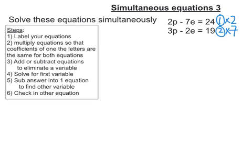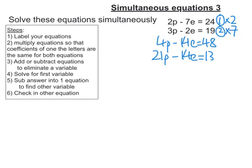Let's multiply everything by 2 in the first one. So, we're going to get 4p minus 14e equals 48. Now, let's do it for the second one. We're going to get 21p, 2 times 7 is negative 14e, and 19 times 7 is 133.